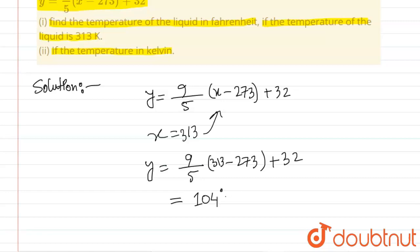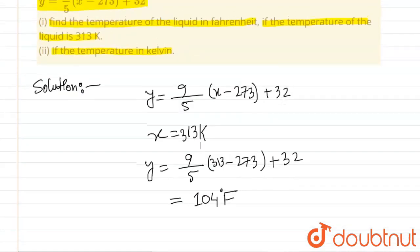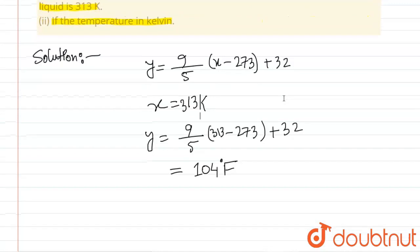So we got the value, we get the value of temperature when it is 313 degree Kelvin. So if you measure this temperature in Fahrenheit, then we will get 104 degree Fahrenheit. So next, let's proceed to the next question.